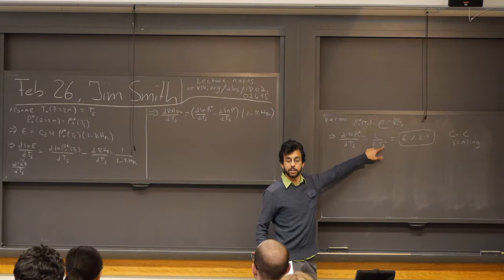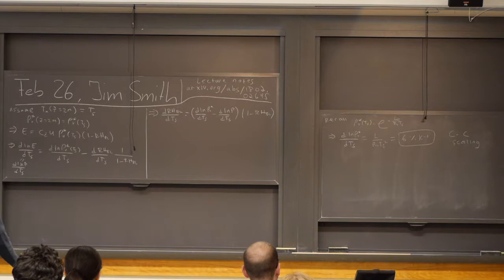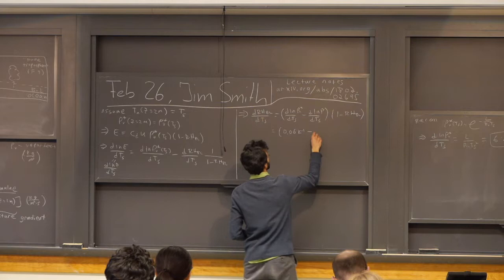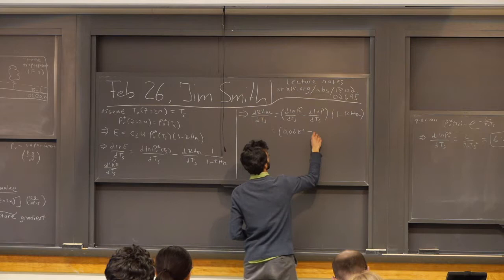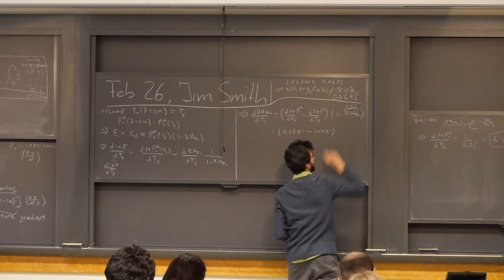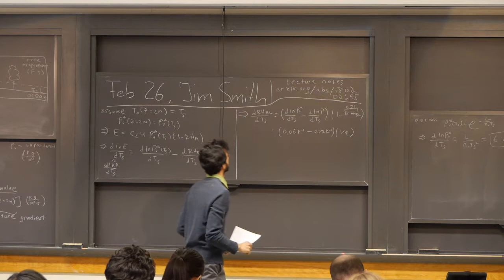So when people talk about how with global warming the atmosphere is going to get warmer and hold more moisture, and the moisture content of the atmosphere increases at 6% per Kelvin — this is where that number comes from. It's just a combination of fundamental constants and the surface temperature. It actually varies a little bit with surface temperature, so in different climates you get a different scaling — it's not always 6% per Kelvin. But this is a fun thing to see explicitly because it's a number you hear batted around a lot. So that gives us 0.06 K⁻¹.